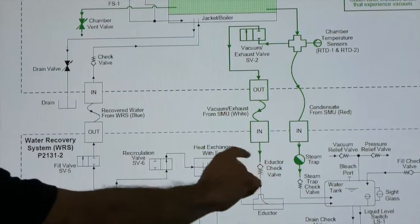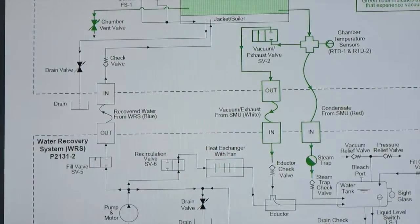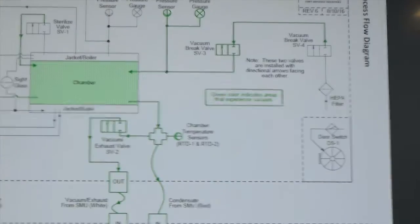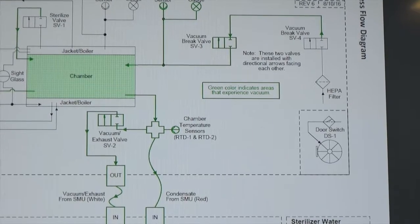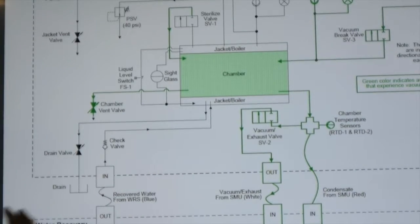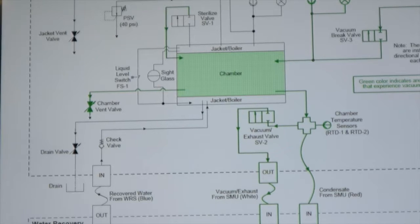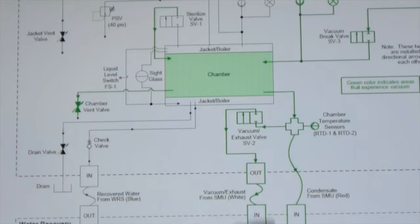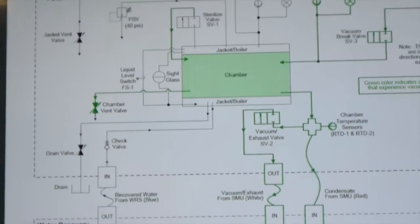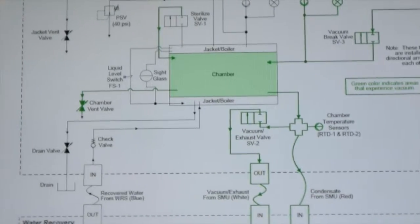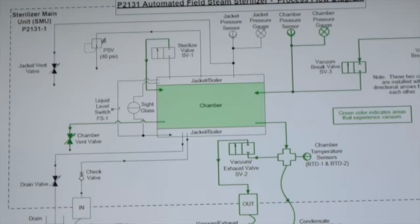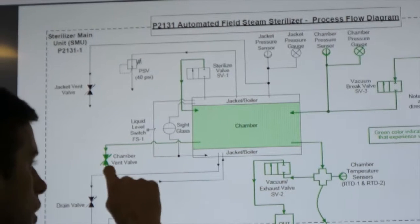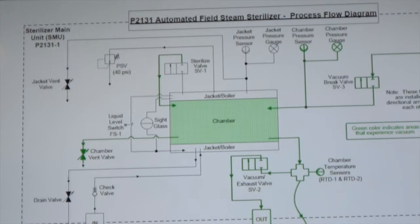So you'll notice that a few of the components are highlighted green. We have a little note here that says green color indicates areas that experience vacuum. So since it's very important for this sterilizer to maintain vacuum and hold vacuum since it's a pre-vac sterilizer, we went ahead and highlighted any part that experiences vacuum. What this will do is it'll help you troubleshoot if you're not passing vacuum leak tests.